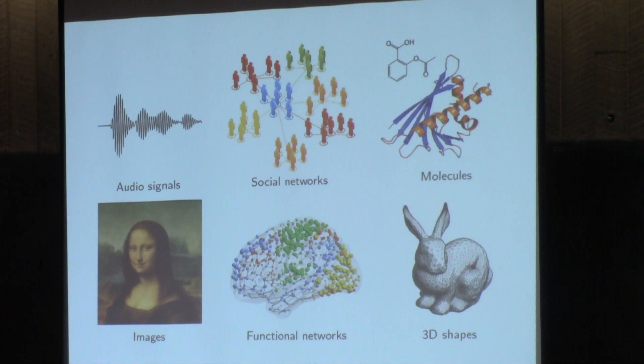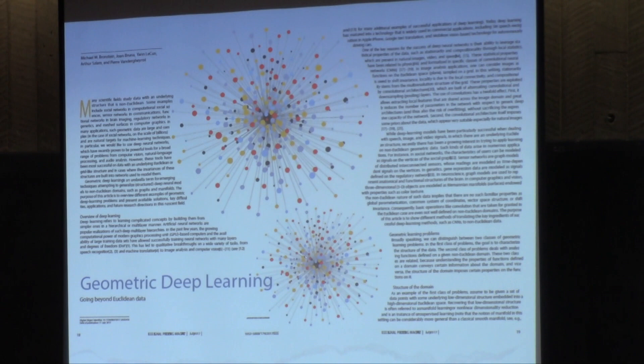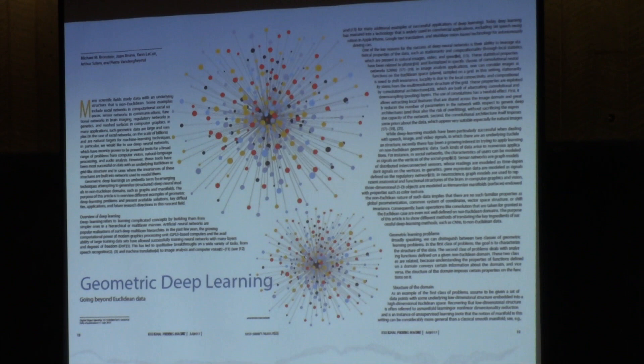In computer graphics and computer vision, we model three-dimensional objects as meshes — think of graphs with some extra structure. We had a paper with collaborators including Joan Bruna, also a member here this year, where we coined the term geometric deep learning. Nowadays there are many, many works in this field, and it has really become very popular.